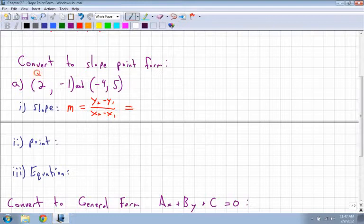That's equal to—remember that my points are x₁, y₁, x₂, and y₂. So y₂ minus y₁ is 5 minus negative 1, divided by my x₂, which is negative 4, minus my x₁, which is just 2.